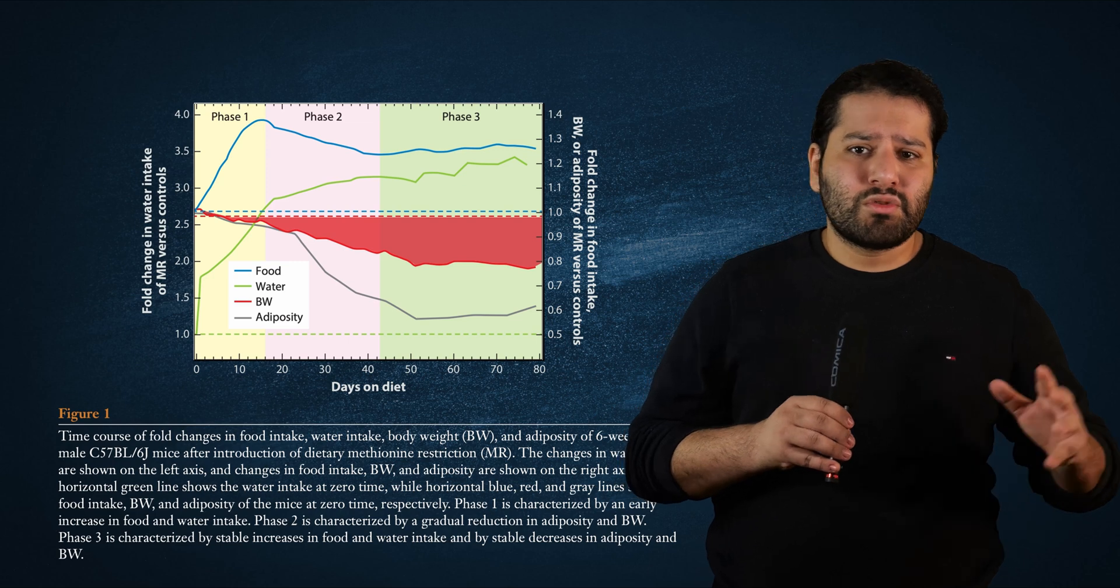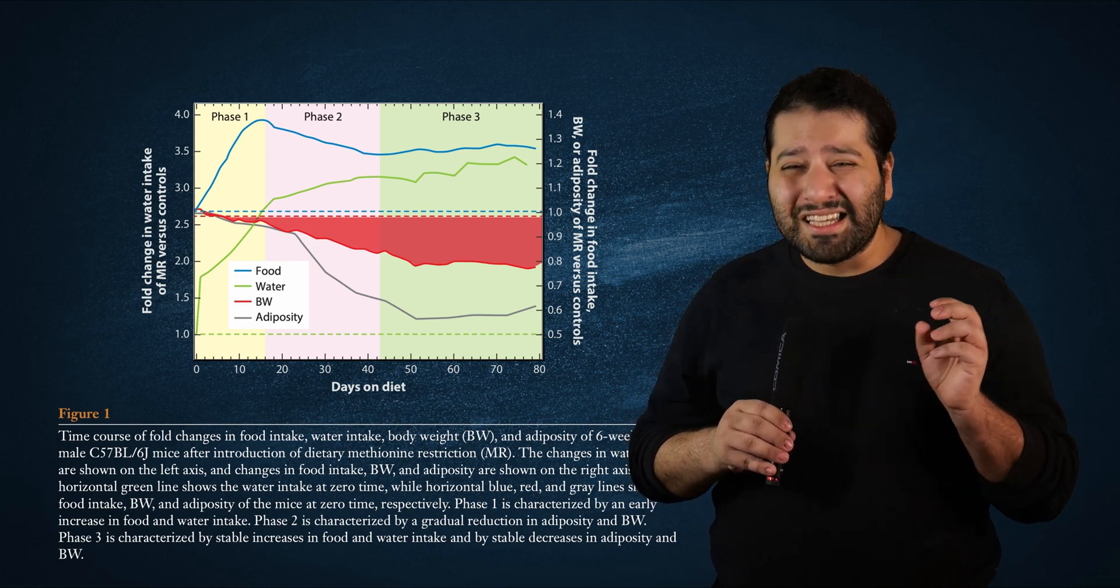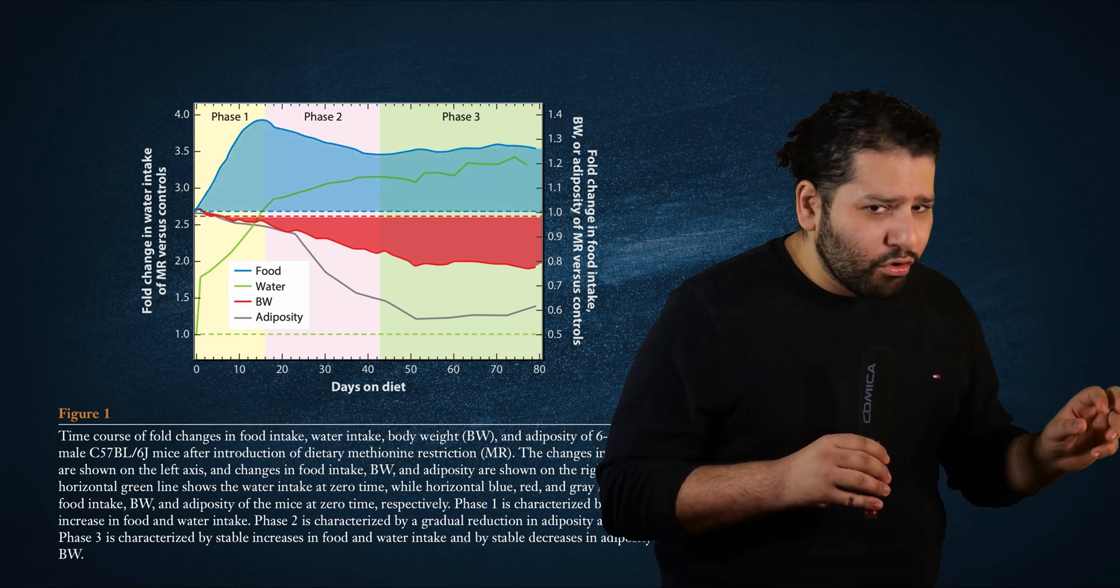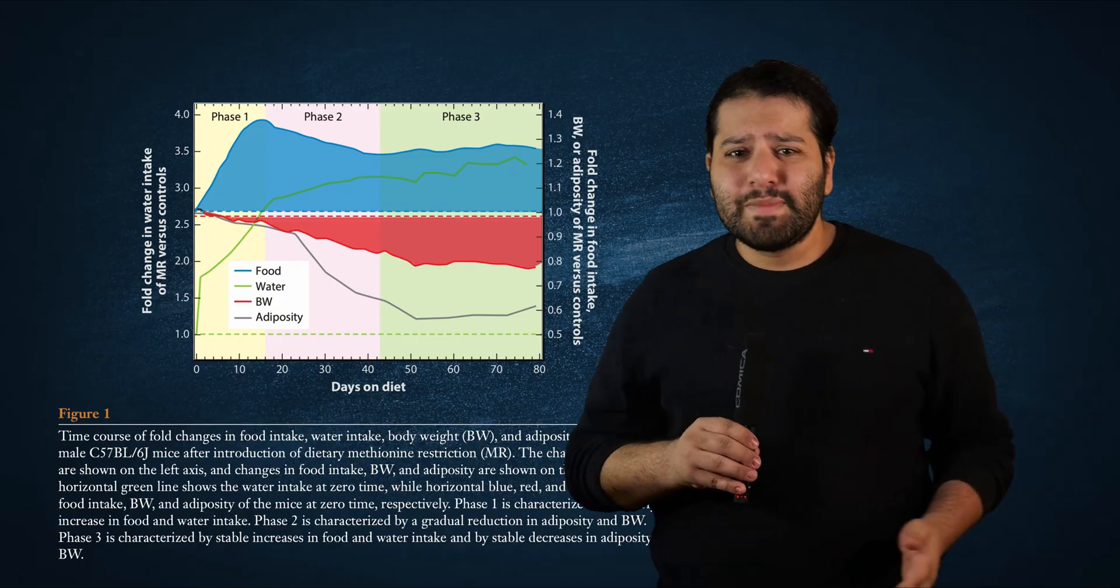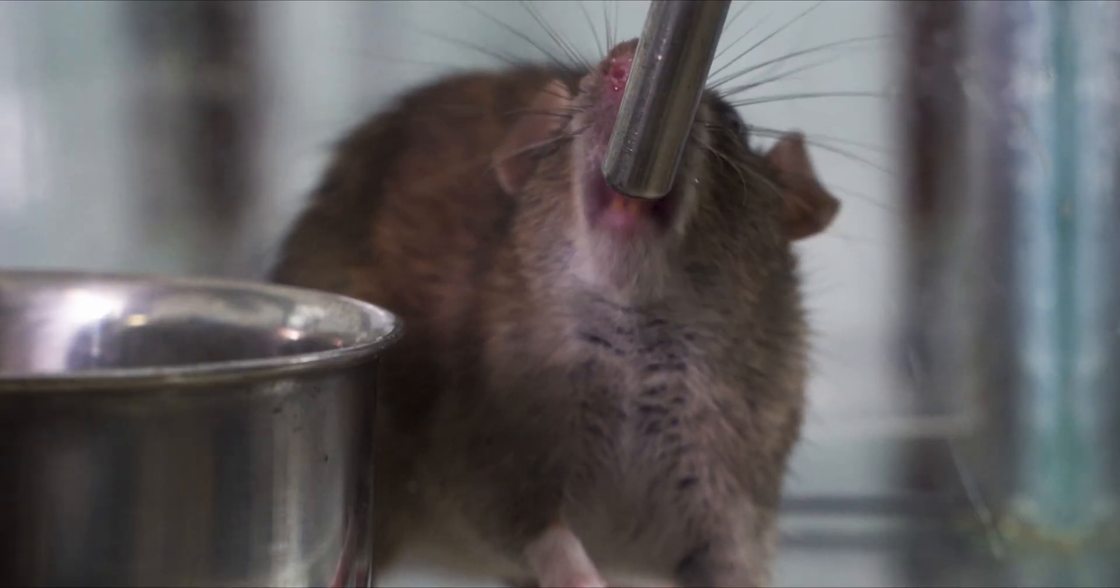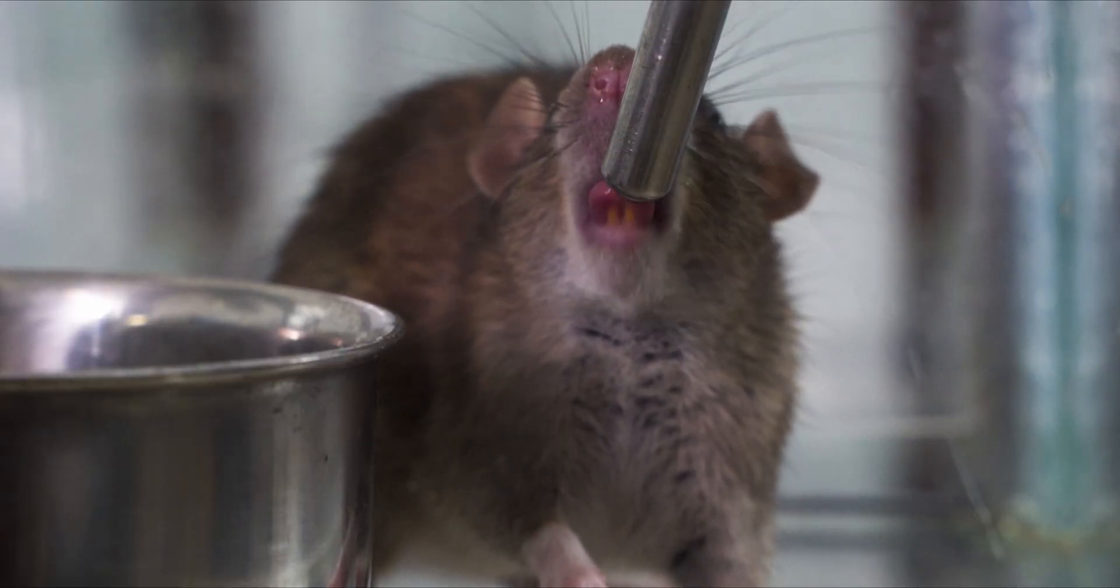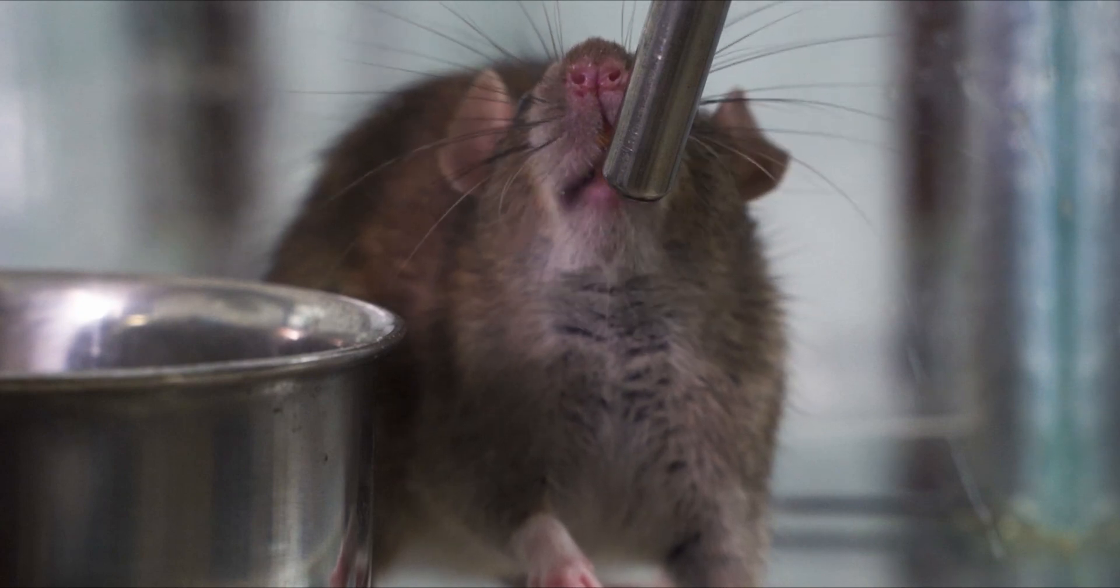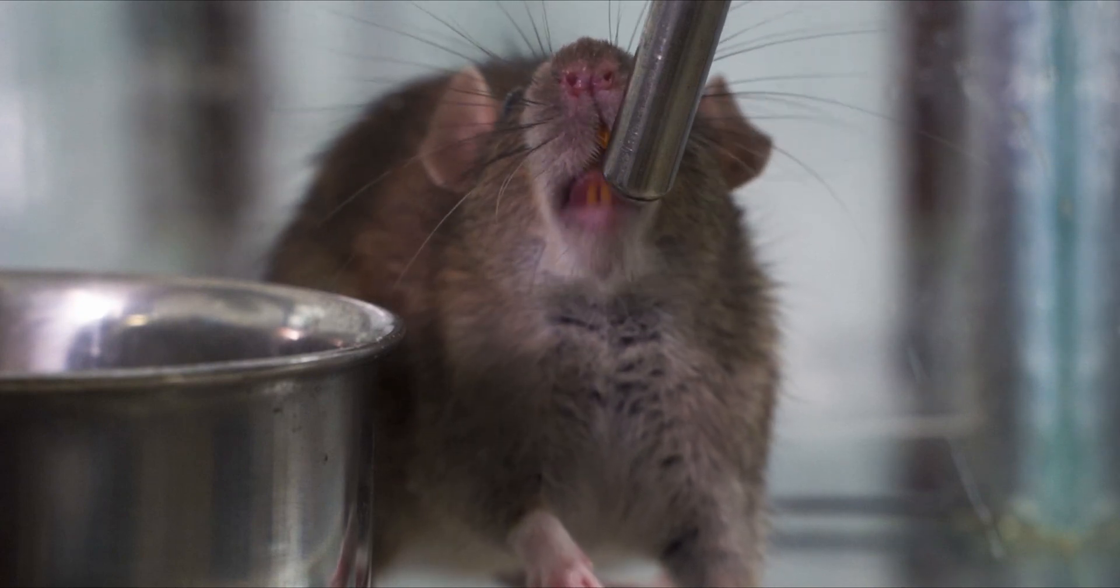This all despite the methionine restricted mice consuming 20% more food. So methionine restriction is making these baby mice eat more but still lose weight and body fat all the while extending their lifespan and protecting them against cancer.